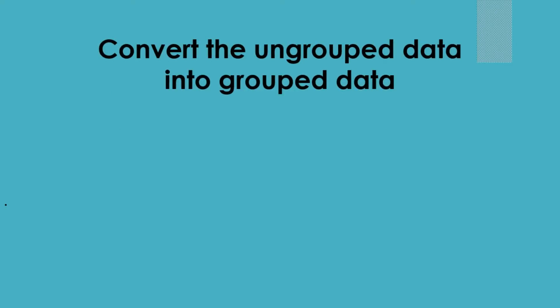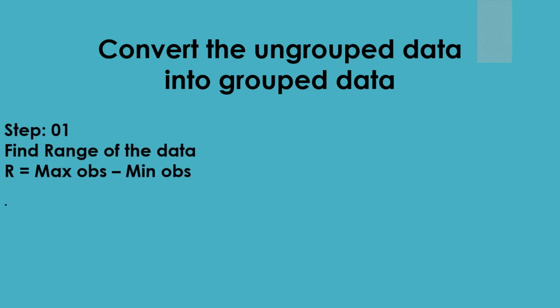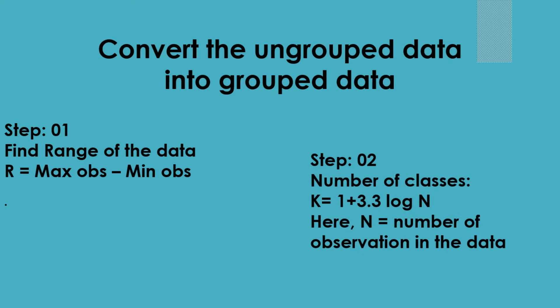To convert ungrouped data into grouped data, there are three steps. Step one: find the range using the formula — maximum observation minus minimum observation. Step two: find the number of classes, represented by k, which equals 1 plus 3.3 log n, where n is the number of observations. Step three: find the width of the class interval, represented by small h, which equals r divided by k.